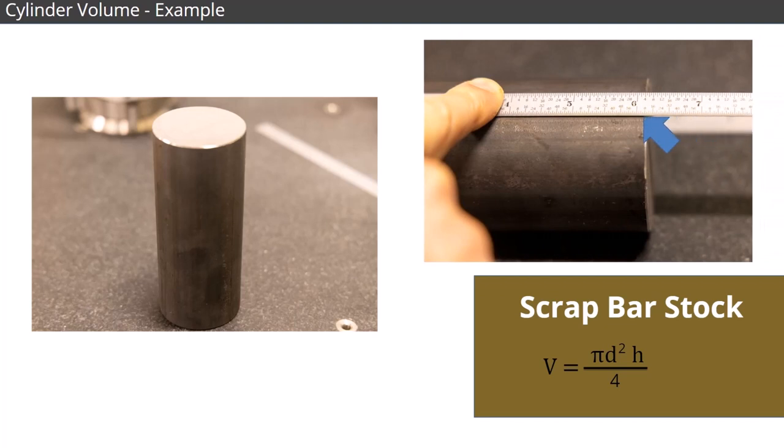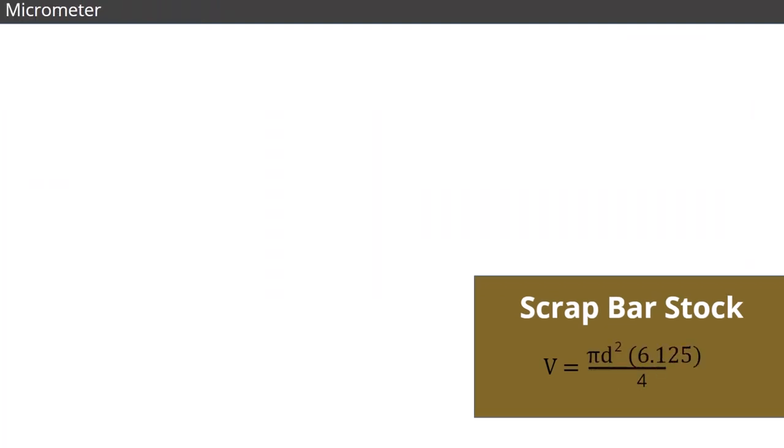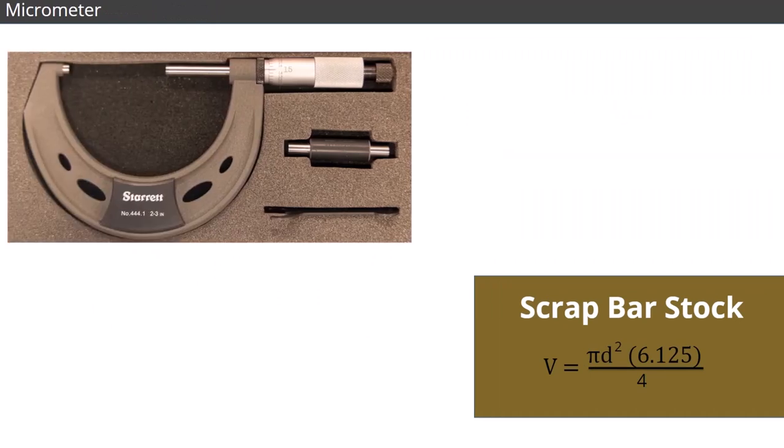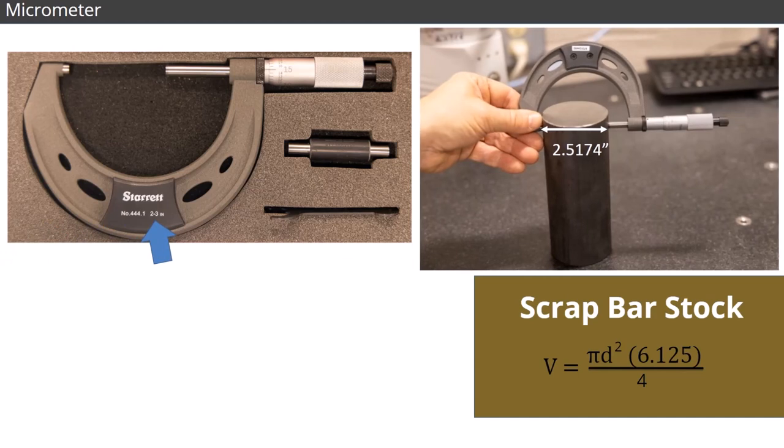In this image, you can see that the height is 6 1/8 inch. We use a micrometer to measure the diameter. In this case, we're using a 2 to 3 inch micrometer to find that the diameter is 2.5174 inches.